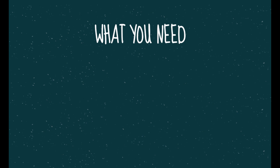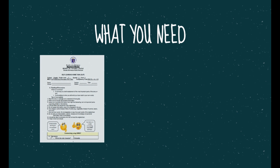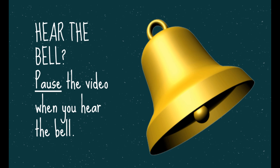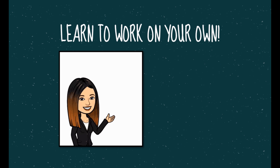For this lesson, you will need your English 7 home task for week 5, some pieces of bond paper for your outputs, and a pen. Pay attention when you hear the bell sound — that means you may need to pause the video in order to do the task given. Then resume the video once you're done. And remember to work on your own.